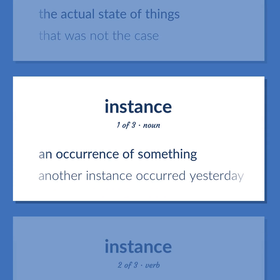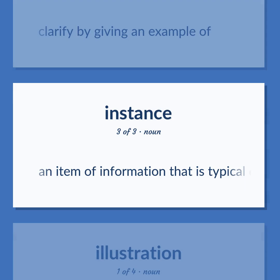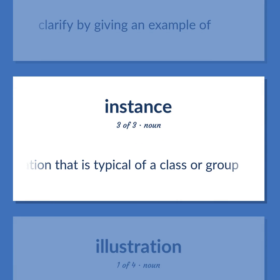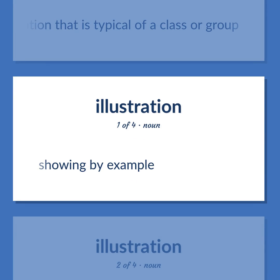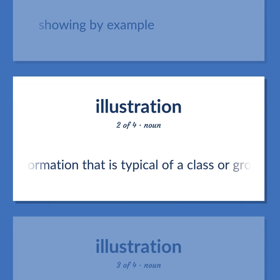Instance: an occurrence of something — 'Another instance occurred yesterday.' Clarify by giving an example of. An item of information that is typical of a class or group. Showing by example. An item of information that is typical of a class or group.